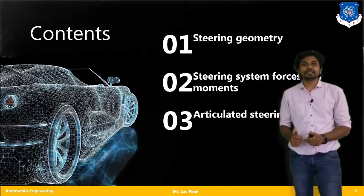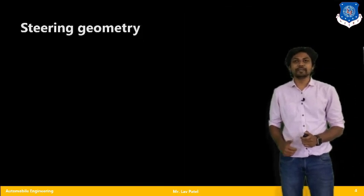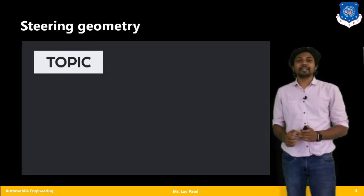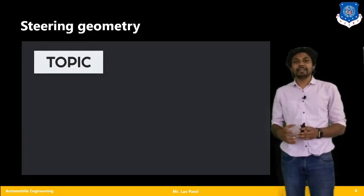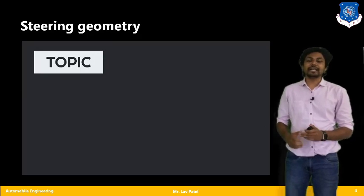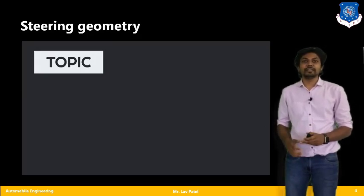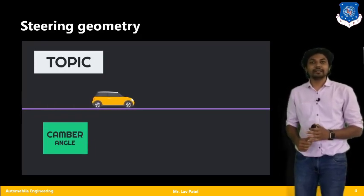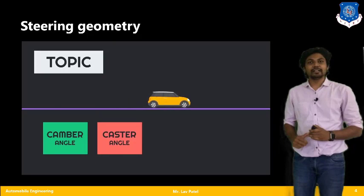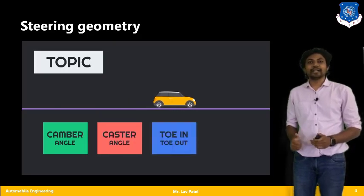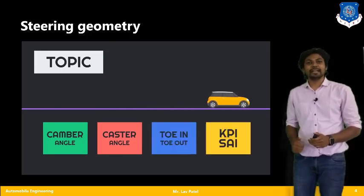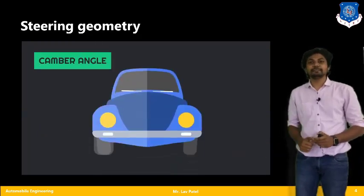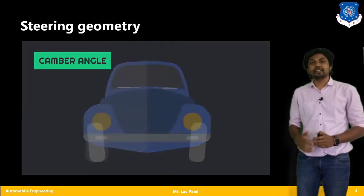Let us begin with the first topic: steering geometry. We have to consider several parameters while designing our steering geometry. These include: first, camber angle; second, castor angle; third, toe in and toe out; and fourth, KPI and SAI. These are the four topics we will cover under steering geometry.